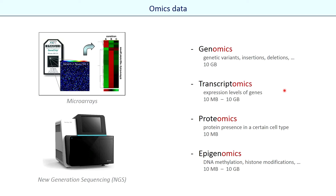There are many types of omics data and several specific approaches of machine learning that target particular data types. Today we will consider transcriptomic data as an example, which measures expression levels of genes, and some classical machine learning approaches that can be used for different omics — not only transcriptomic but also proteomic data, methylation data, and so on.